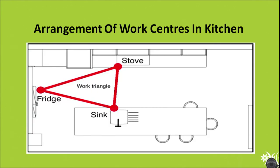Now we will talk about the arrangement of work centers in the kitchen. The basic needs in the kitchen are a cooking area or stove, a sink to wash utensils, and a refrigerator or storage for food material. The fridge can be inside or outside the kitchen depending on available area. You are seeing the work triangle, which relates to the flow of work so you don't have to move around the whole kitchen unnecessarily — you pick up the item, cook it, and if you need to wash utensils or need water, you move accordingly.